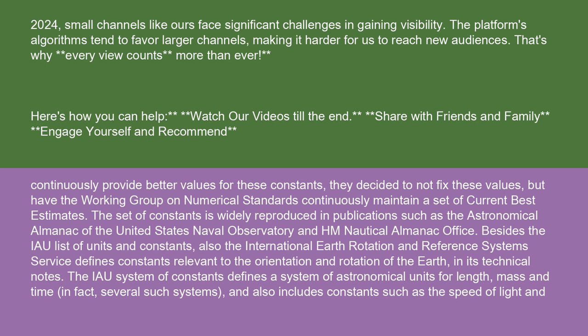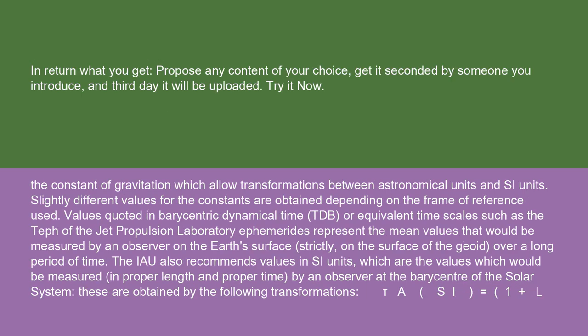The IAU system of constants defines a system of astronomical units for length, mass, and time — in fact, several such systems — and also includes constants such as the speed of light and the constant of gravitation, which allow transformations between astronomical units and SI units. Slightly different values for the constants are obtained depending on the frame of reference used.